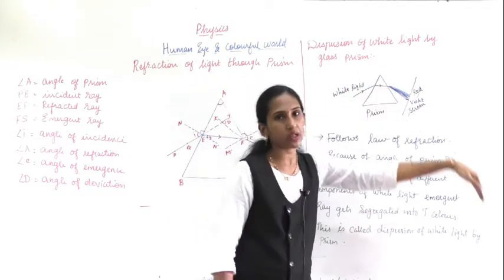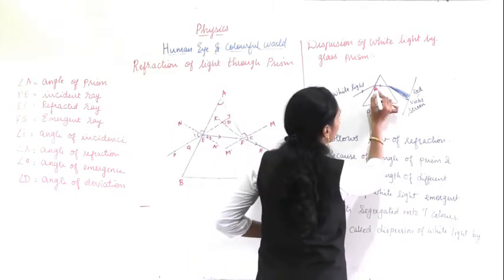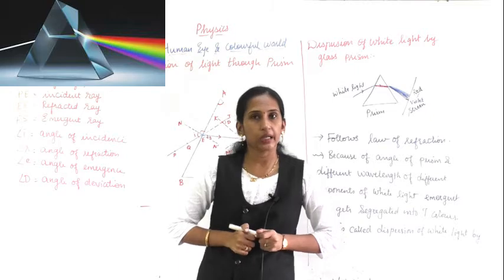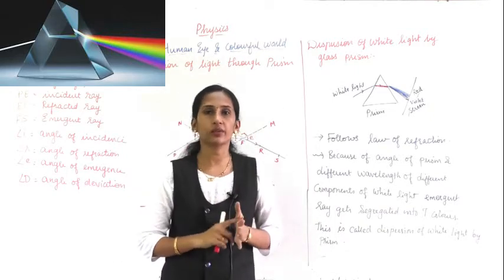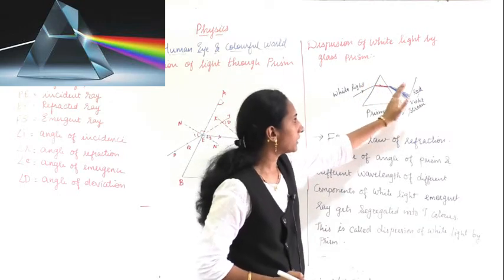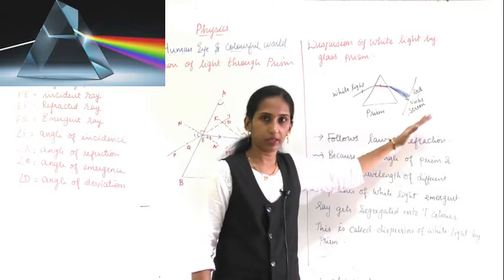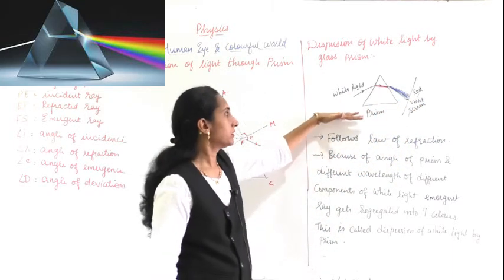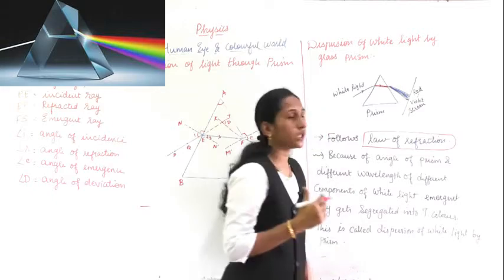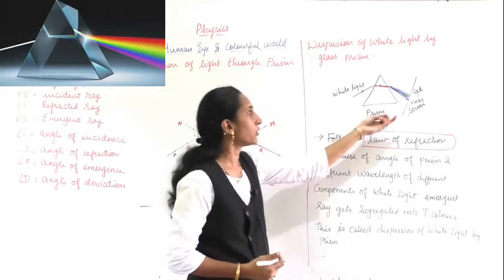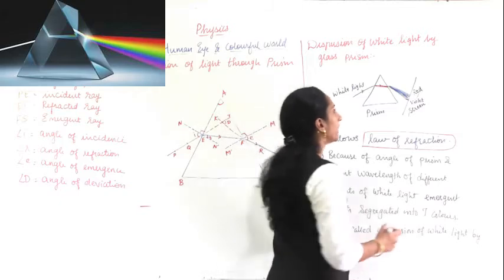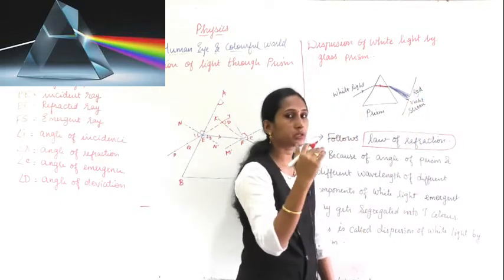When the white light enters the prism, it gets split into seven colors: violet, indigo, blue, green, yellow, orange, and red. You can see all seven colors on the screen — this is called the splitting of light. This splitting follows the law of refraction — that is very important. Because of the law of refraction, the light splits into the seven different colors.